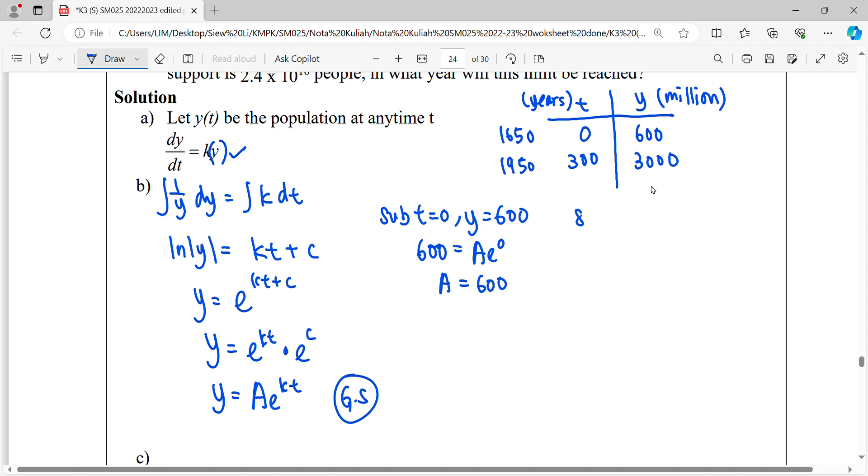Then the second information, we substitute t equals 300 and y equals 3000. Once we find our A, we can use A here which is 600. Simplify, move the 600 back to the left-hand side, divided by 600, which is 5.